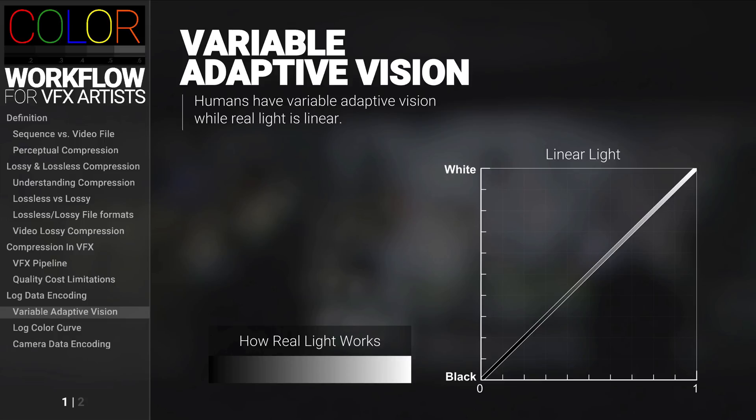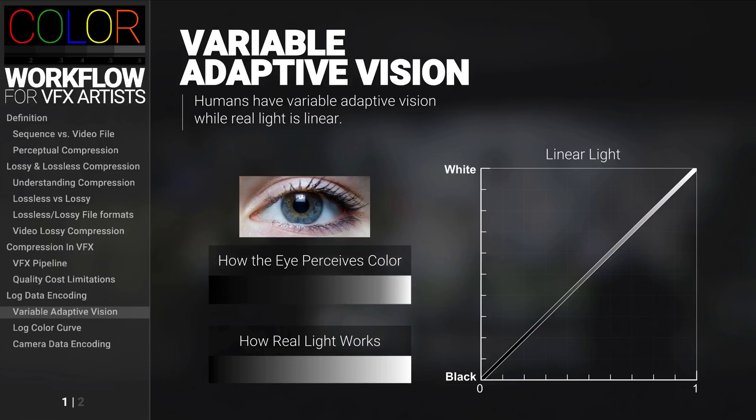So real light is linear. However, human vision does not perceive light in a linear way. Earlier in the presentation, we talked about how the eye is made up of rods and cones. Along with a dilating iris, this gives humans the ability to have variable adaptive vision, with greater sensitivity to dark values and less sensitivity to light values.